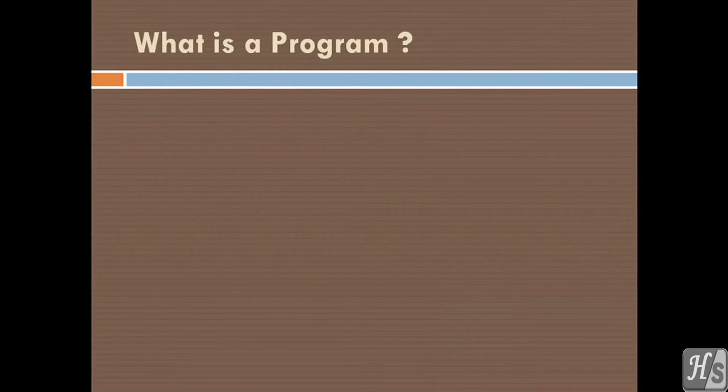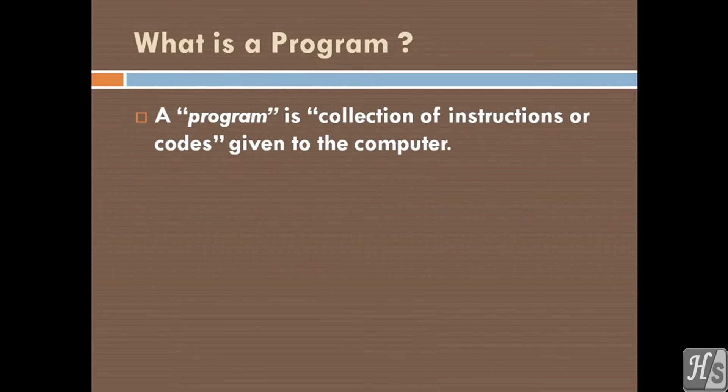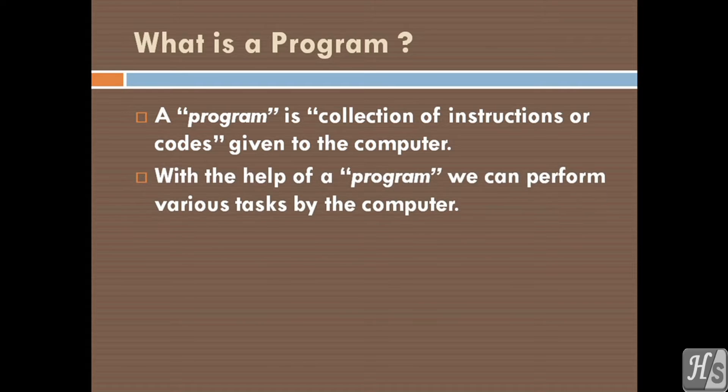What is a program? Software is collection of programs, and a program is collection of instructions or codes given to the computer. With the help of a program, we can perform various tasks by the computer.